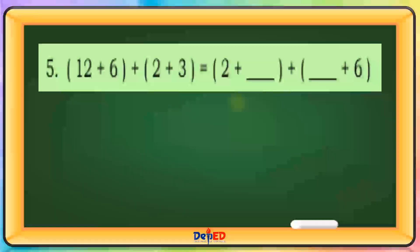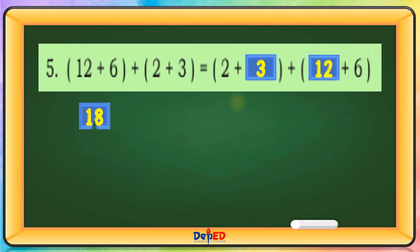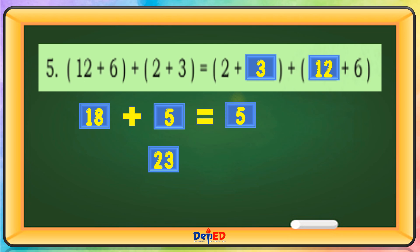12 plus 6 plus 2 plus 3 — our missing terms are 3 and 12. 12 plus 6 equals 18. 18 plus 5 equals 23. 5 plus 18 equals 23.